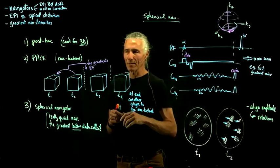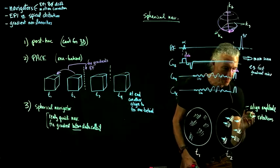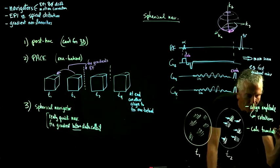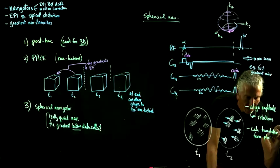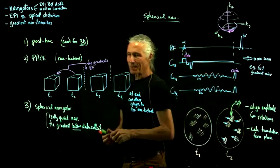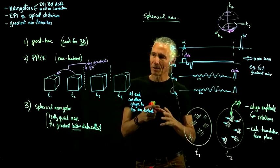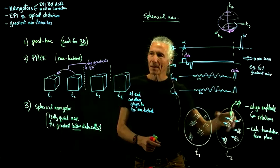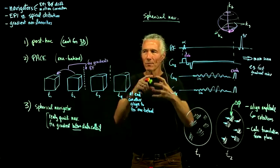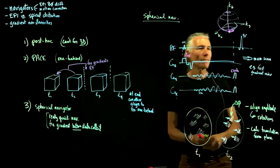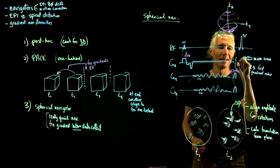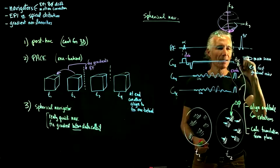That will tell you the rotation — how is the brain rotated — but it won't tell you how the brain is translated. How do you figure out the translation? Calculate translation from phase — the Fourier shift theorem again. You basically look at this and see what the phase difference is. The phase difference will correspond to the XYZ translation. Since they're going around the whole sphere, you'll have enough information to calculate the XYZ translation. So you'll be able to figure out the rotation of the head and the XYZ translation of the head. With that information, you can feed them back in and fix — fix the gradients and the RF frequency.